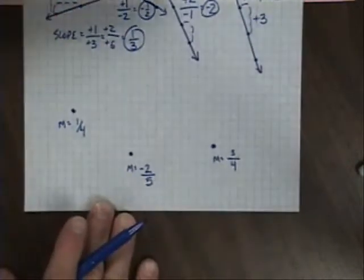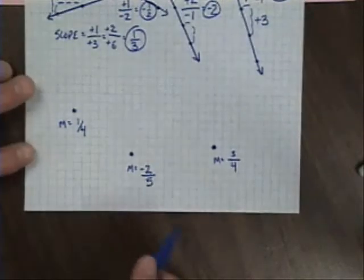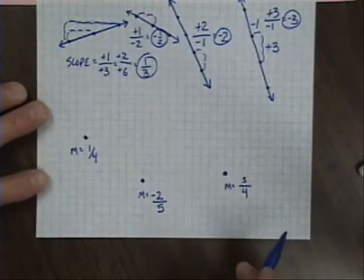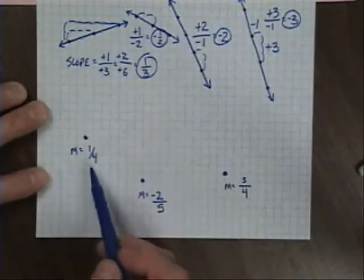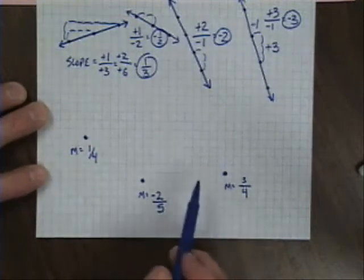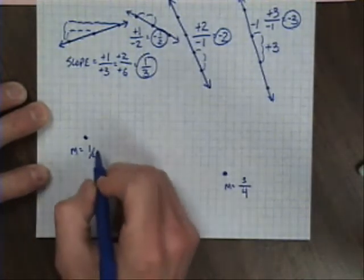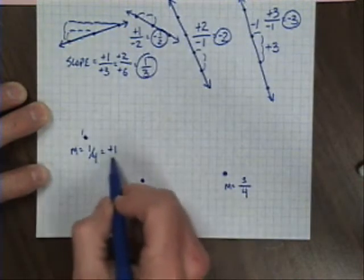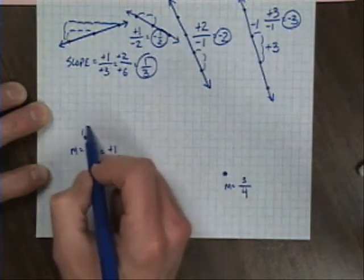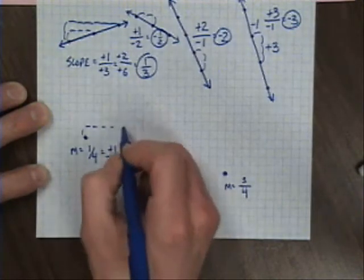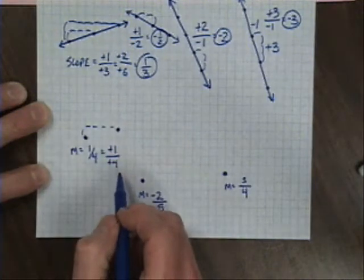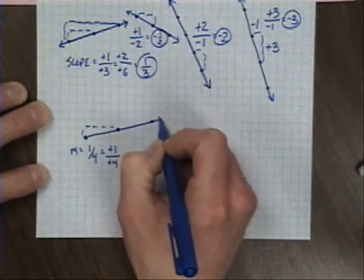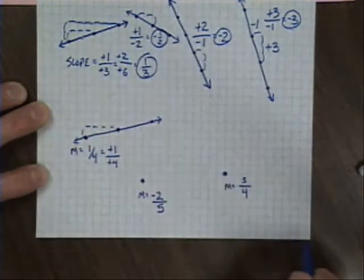A secondary skill you'll need is to be able to graph a particular slope from a given point. I'm not associating these with ordered pairs on a coordinate plane — I'm simply giving you a point and asking you to graph a particular slope. For a slope of one-fourth, think of one as plus one or up one, and four on the bottom as plus four, moving over four spaces. Count that out, place a dot, do it again, connect those together and you have a slope of one-fourth.